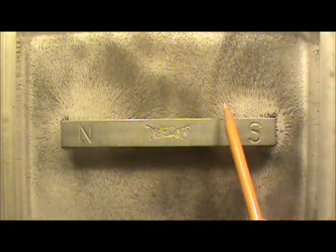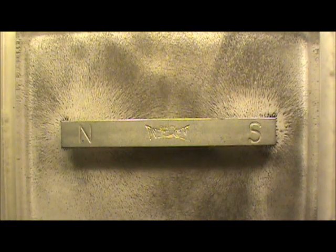The iron filings line up with the magnetic field lines because the iron filings get polarized, which means magnetized by the magnet.